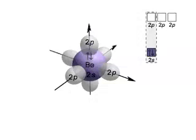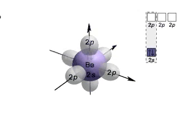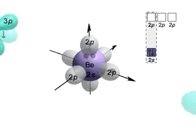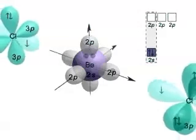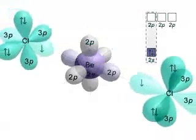Putting these ideas together, we can imagine the hybridization process for BeCl₂ is something like this. The isolated beryllium atom, with its filled 2S and empty 2P orbitals, is shown with the small box diagram above. The chlorines have three 3P orbitals, but we'll fade out the ones that are not involved in bonding.